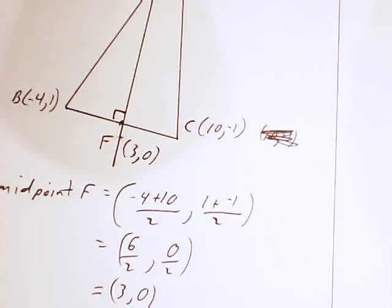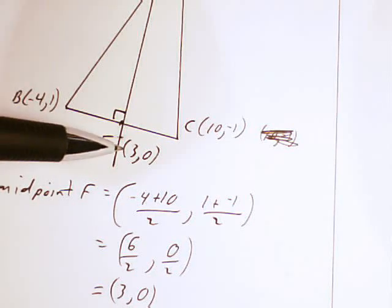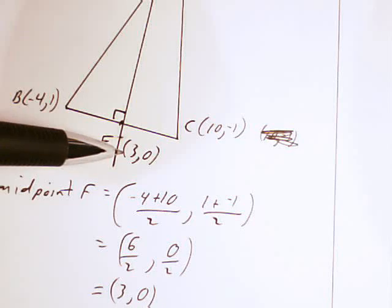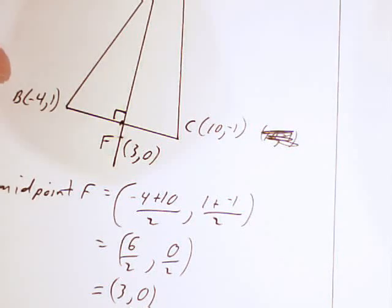We're now going to use this slope with this point in our slope point equation to get the standard form equation of the perpendicular bisector.